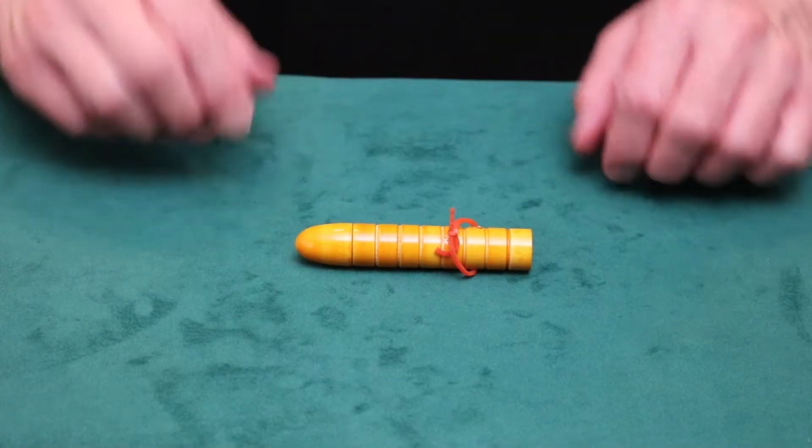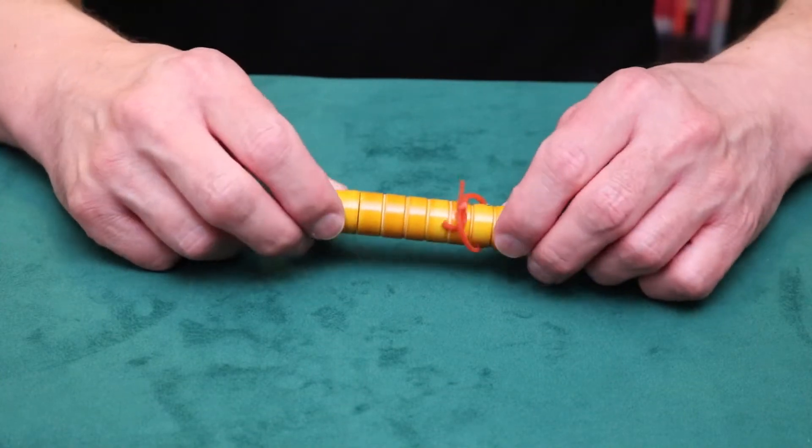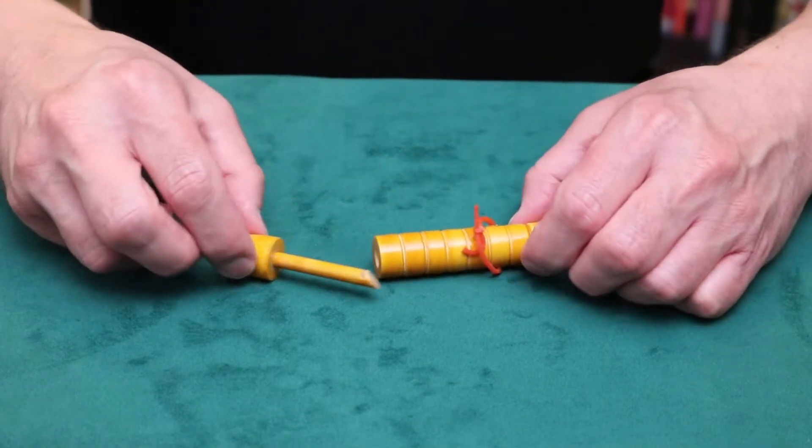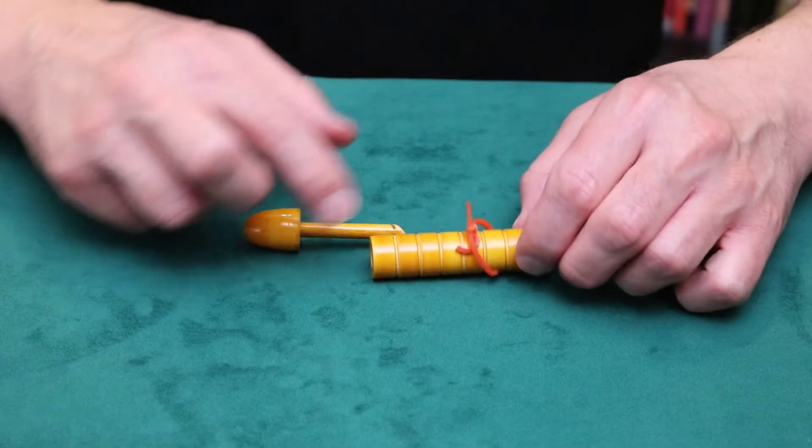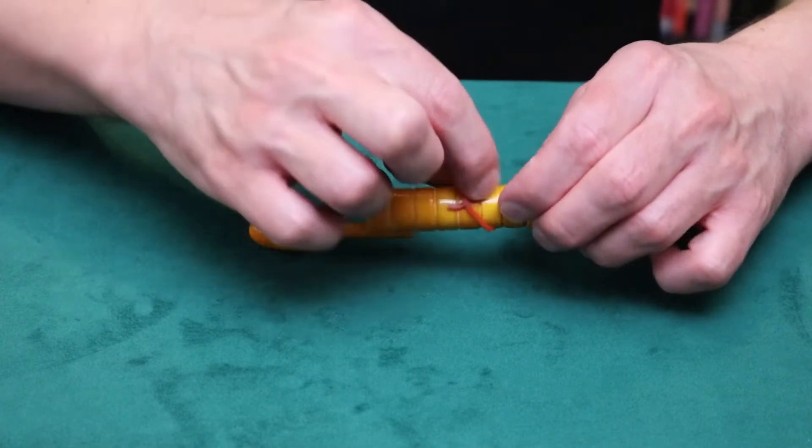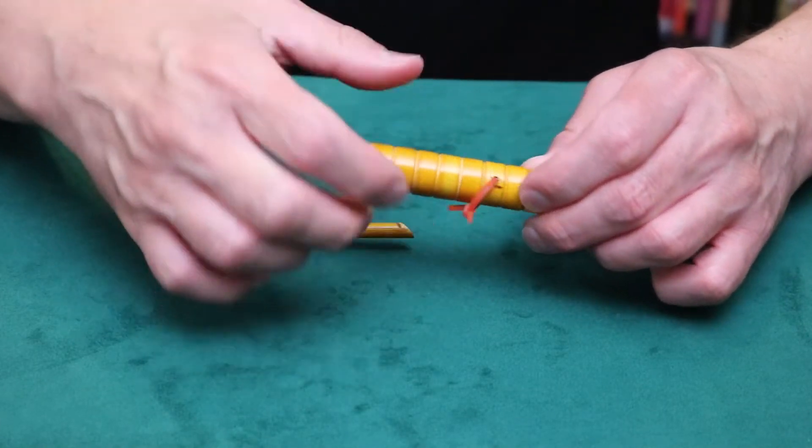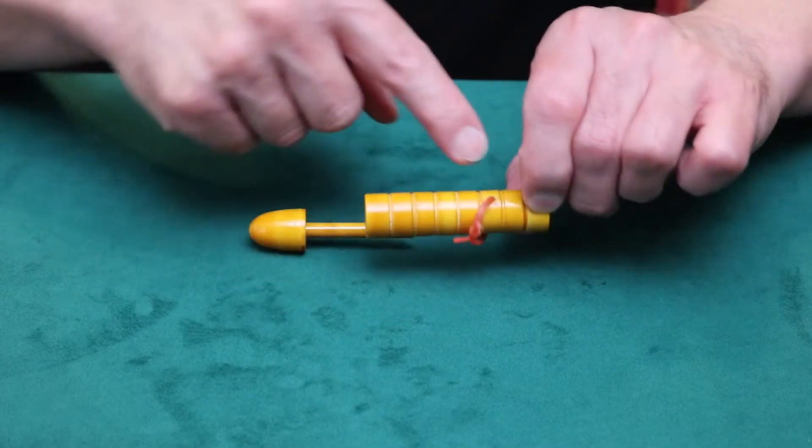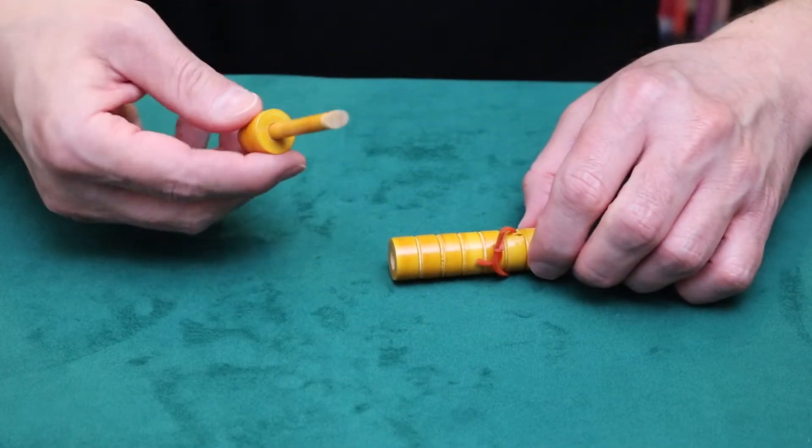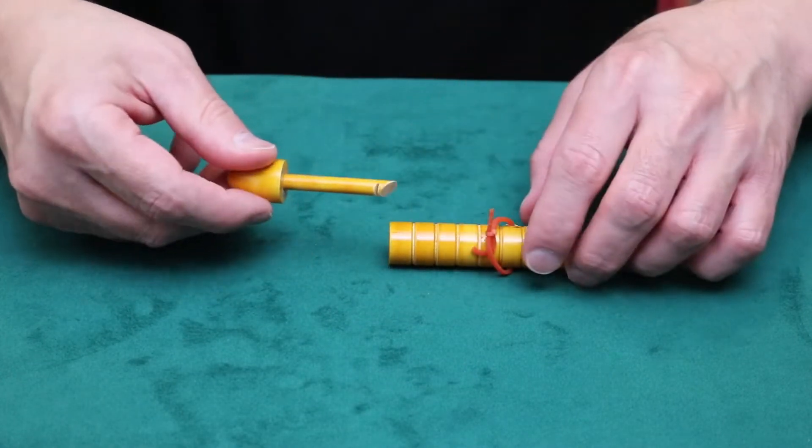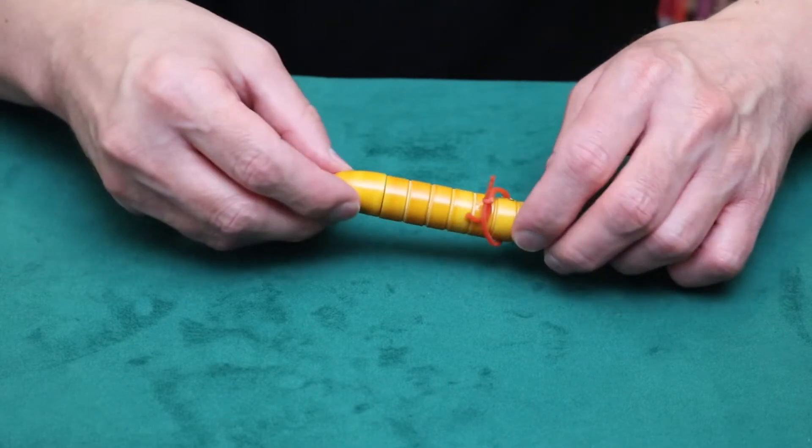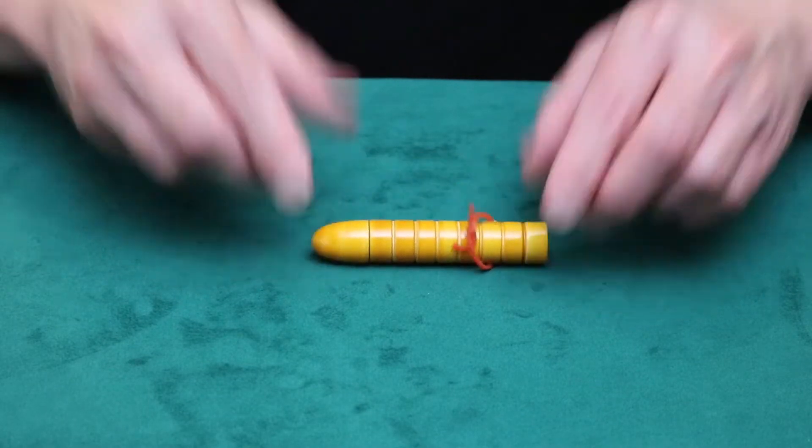This is called the Snapper. It's an awesome puzzle that you can fool your friends with. It involves a wooden cylinder with a rubber band that goes kind of through. If you look inside, you'll see the rubber band and it has a hook. Now this hook can hook the rubber band from the inside. That's the object of the puzzle.